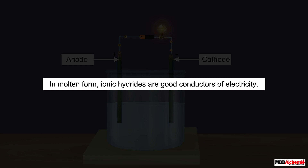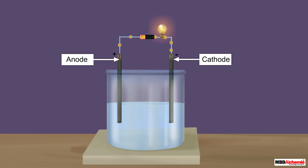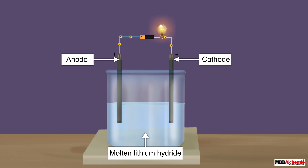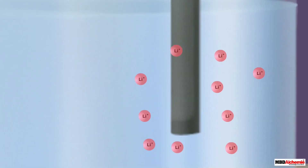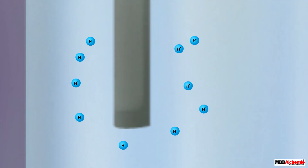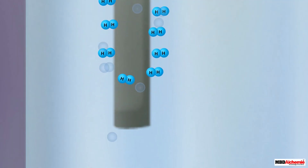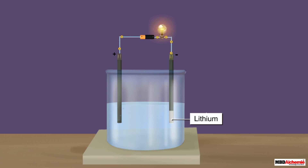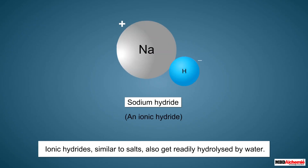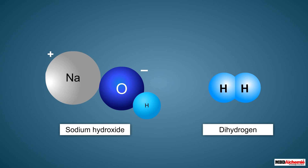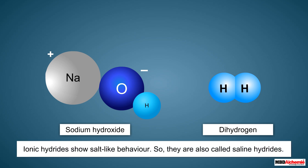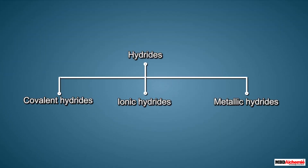However, when in molten form, ionic hydrides are good conductors of electricity, just like salts. For example, molten lithium hydride when electrolyzed allows electricity to pass through it — lithium ions get reduced at the cathode, while hydride ions get oxidized at the anode, depositing lithium at the cathode and releasing hydrogen gas at the anode. Ionic hydrides also get readily hydrolyzed by water, producing an alkali and hydrogen gas. Due to their salt-like behavior, they are also called saline hydrides.